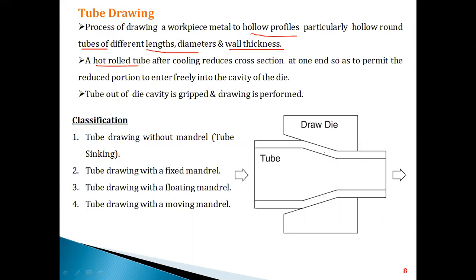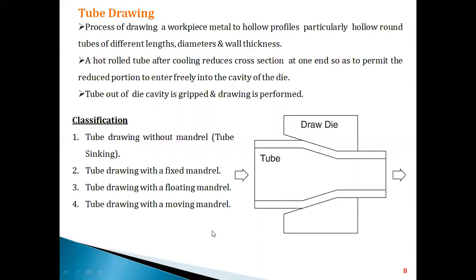The material is a hollow structure, and we are pulling and drawing this material to get a hollow cylindrical profile of different lengths and diameters. Initially, a hot rolled tube is used; one end of its cross-section is reduced so that it freely enters into the die cavity. From there, the drawing or pulling action is applied, and once the tube comes out of the die cavity, it is drawn using drawing equipment.